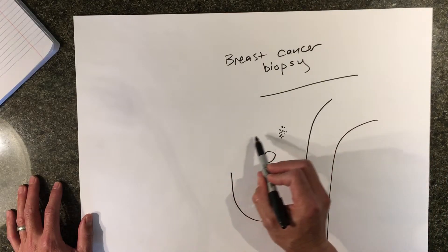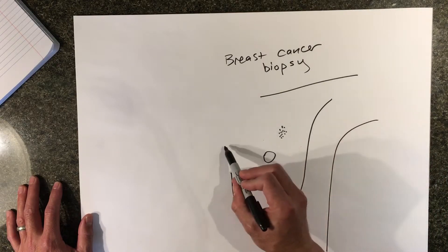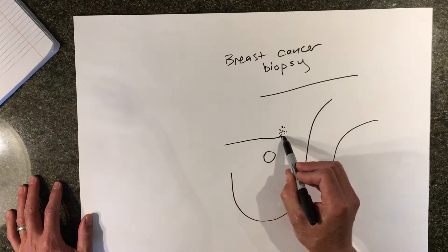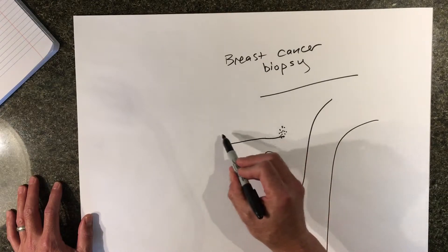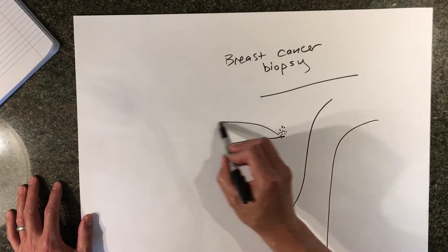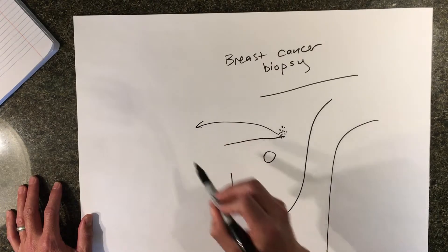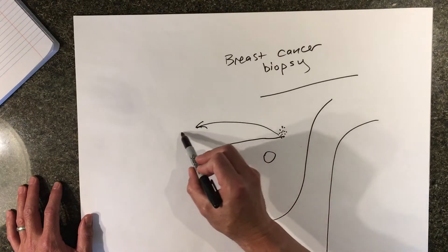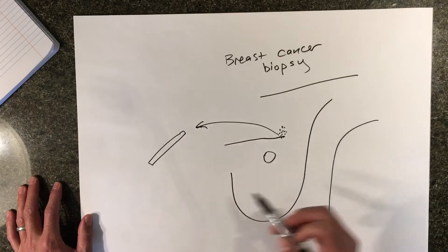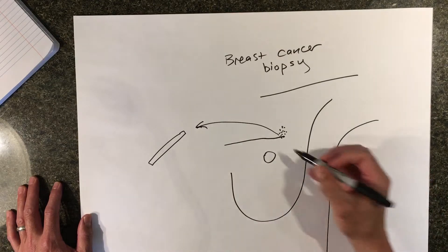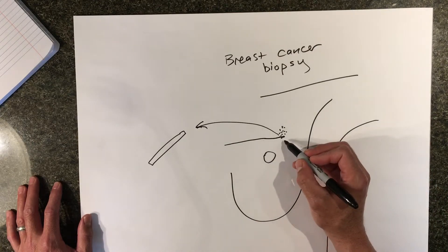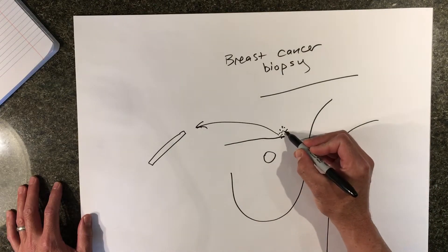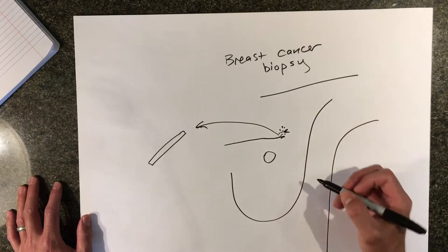When a mammogram is used, they use a large needle that actually removes a core of tissue from the mass. This piece of tissue is examined by a pathologist. And after the biopsy is done, a small metal clip is left in the area of the biopsy.